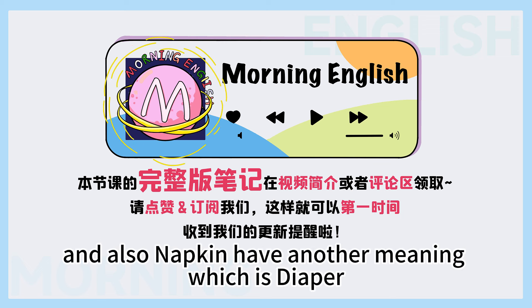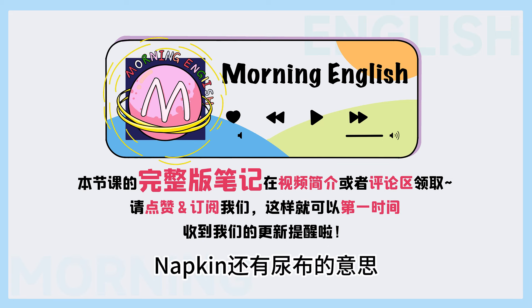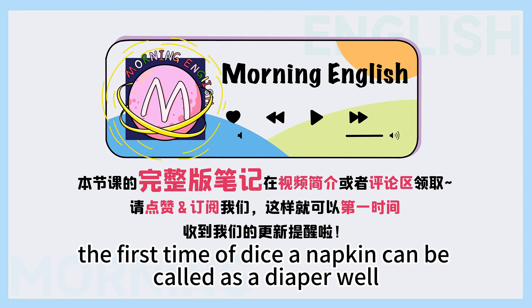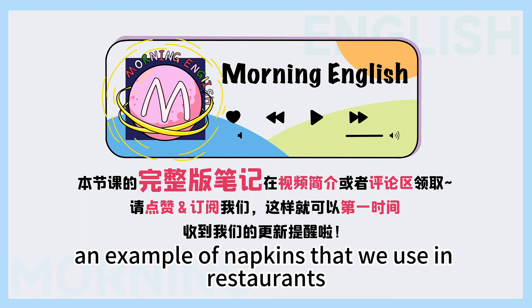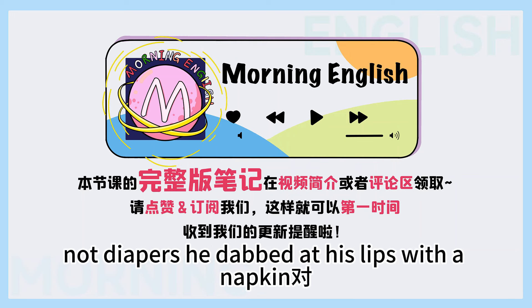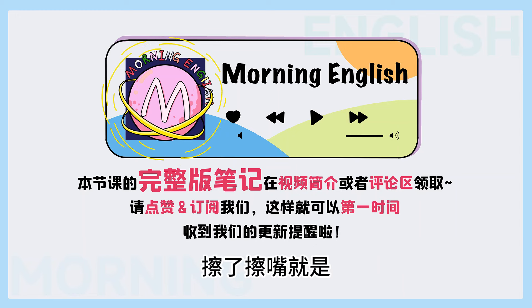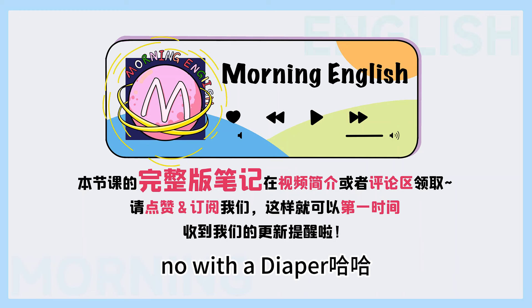Napkin has another meaning — which is diaper! 对, napkin还有尿布的意思! But let's give an example of napkins that we use in restaurants, not diapers. 'He dabbed at his lips with a napkin.' 他用餐巾纸擦了擦嘴, just with a napkin — not with a diaper!